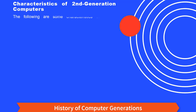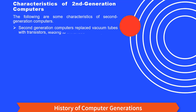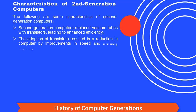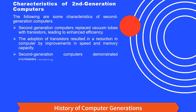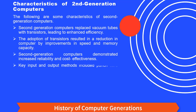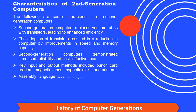Second generation computers replaced vacuum tubes with transistors, leading to enhanced efficiency. The adoption of transistors resulted in improvements in speed and memory capacity. Second generation computers demonstrated increased reliability and cost-effectiveness. Key input and output methods included punch card readers, magnetic tapes, magnetic discs, and printers. Assembly language was employed for programming purposes.